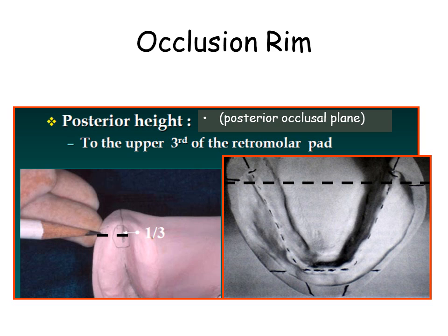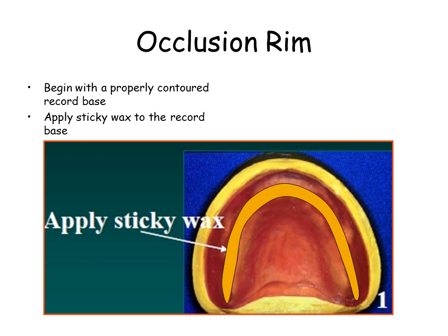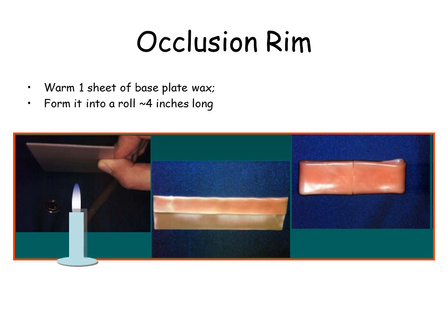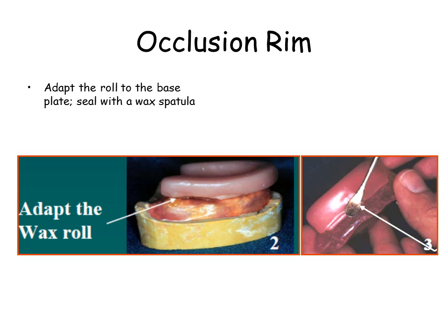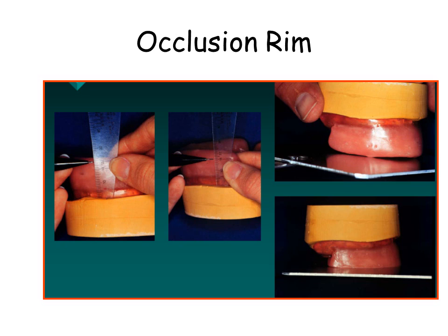Divide the retromolar pad into thirds and draw a line through the upper third onto the land area. Begin with a properly contoured record base. Apply sticky wax to the record base, as seen in the diagram. Warm one sheet of base plate wax and form it into a roll 4 inches long. Adapt the roll to the base plate and seal with a wax spatula. Fabricate to the prescribed dimension and use a hot plate to smooth the rims.